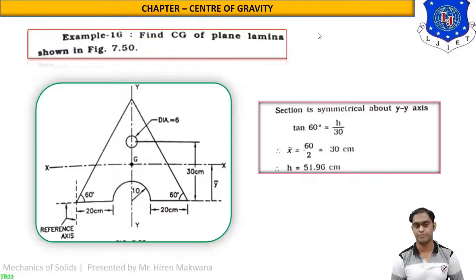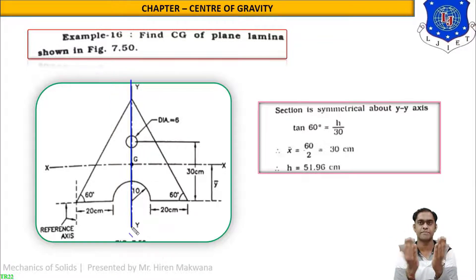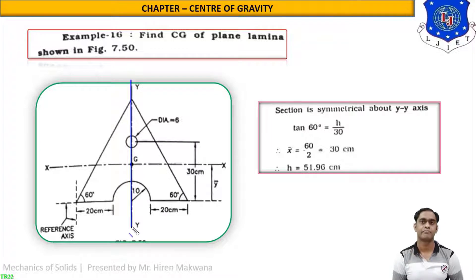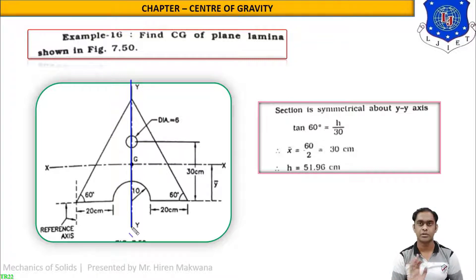From the figure, if you cut this figure exactly about the y-axis, it will form a mirror image on both sides, so it is known as symmetrical to the y-axis. Whenever the figure is symmetrical to the y-axis, x-bar can be directly found, which is equal to the width of the section divided by 2. No need to use the full method for x-bar.